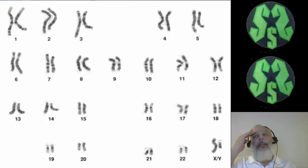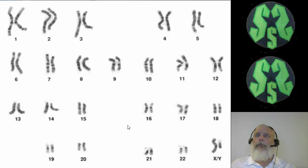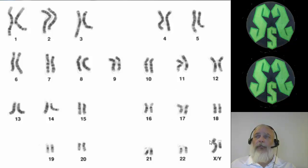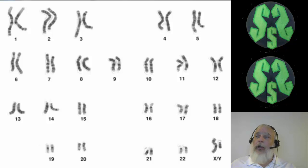If we take a look at this mapping of the chromosomes of a human, you should probably be able to figure out if this is a boy or a girl. Looking down at the 23rd pair, hopefully you said boy, because we have an X — that longer chromosome — and one Y chromosome, the shorter chromosome.